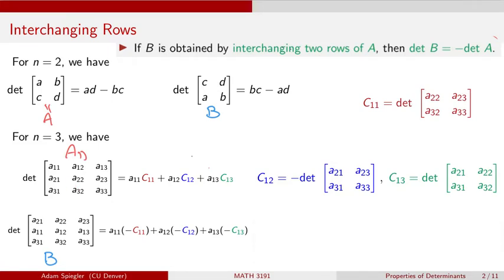I want to point out that when we interchanged the first two rows, the submatrices in each cofactor are the same. When we cross off a given row and column, we're left with the same entries such as A22, A23, A32, A33. The issue is that we changed the cofactor expansion to the second row, which affected the signs — that's what caused the sign change in the determinant.